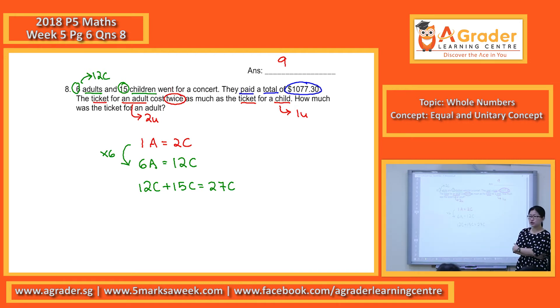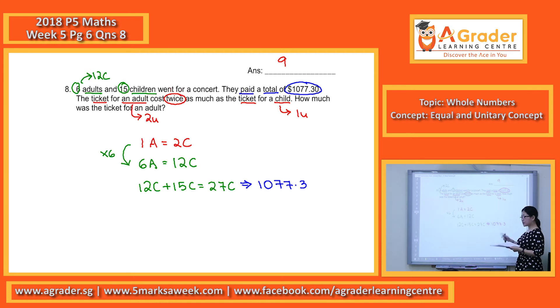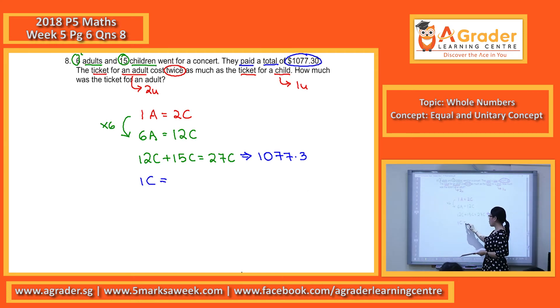This 27 children tickets will be the cost of the $1,077.30. With 27 children tickets costing this, we can now find our cost of one child ticket.